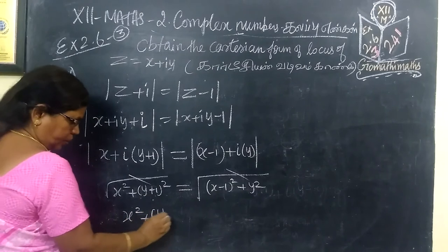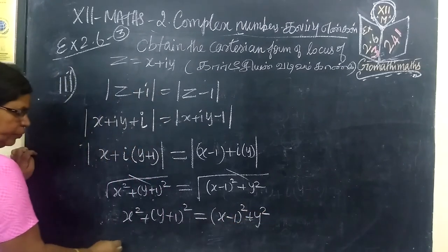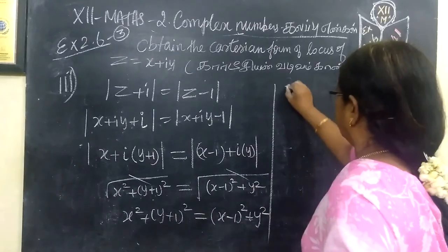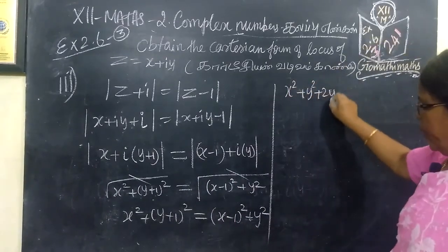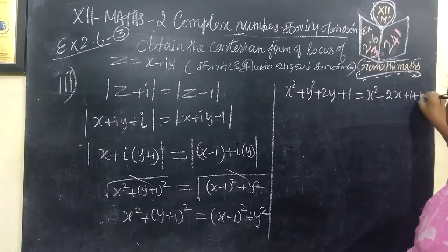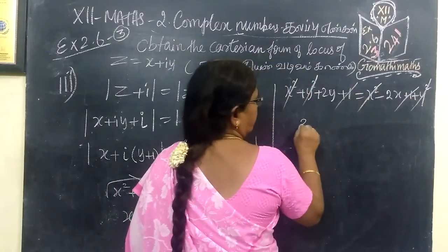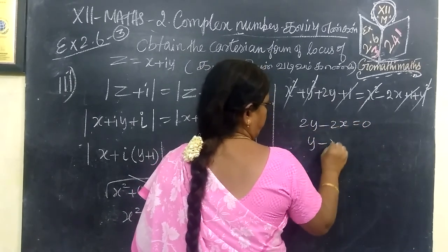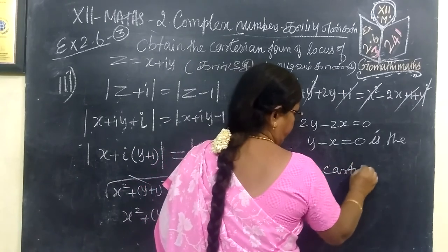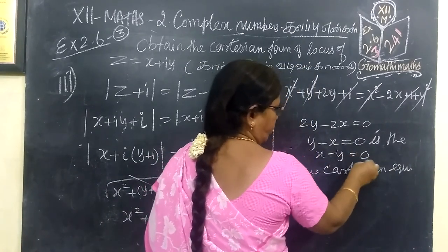So X squared, Y plus 1 whole squared equal to X minus 1 whole squared plus Y squared. So x squared then y squared 2y plus 1 equal to x squared minus 2x plus 1 plus y squared. y squared cancel, x squared cancel, then 1 cancel, so 2y minus 2x equal to 0, so y minus x equal to 0 is the required Cartesian equation.